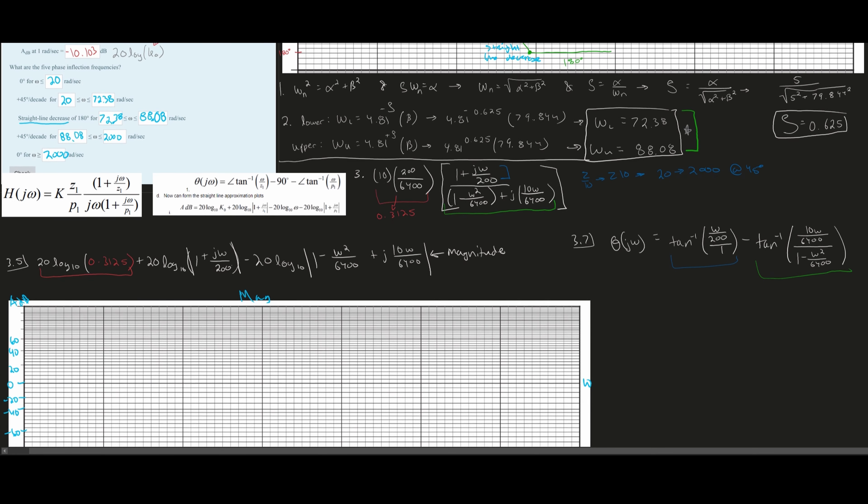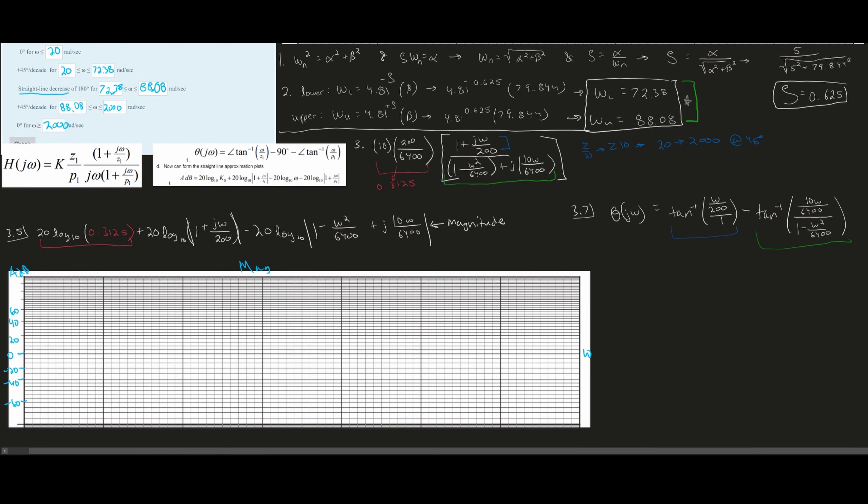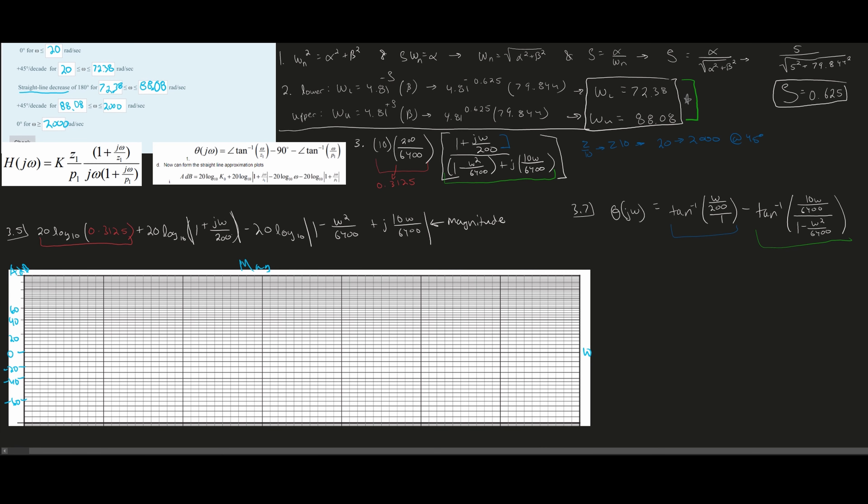So what we are going to be graphing is what we found in the second part, or the third part, sorry, dB at 1 rad per second. So we're going to be graphing approximately negative 10. So graphing negative 10 is going to put us around this range. So we have a negative 10 right here, and this is going to go the entire length right along here. So we can write this as negative 10.103. Now we are going to look at the next part, and this part right here is very similar to what we have in the fourth row.